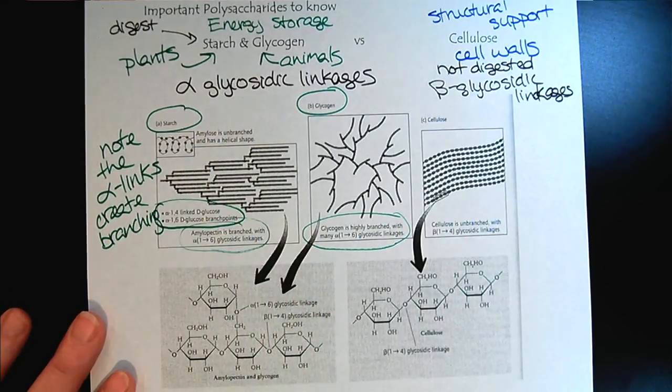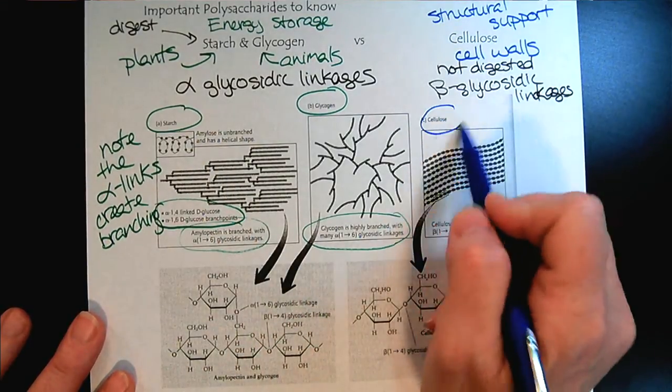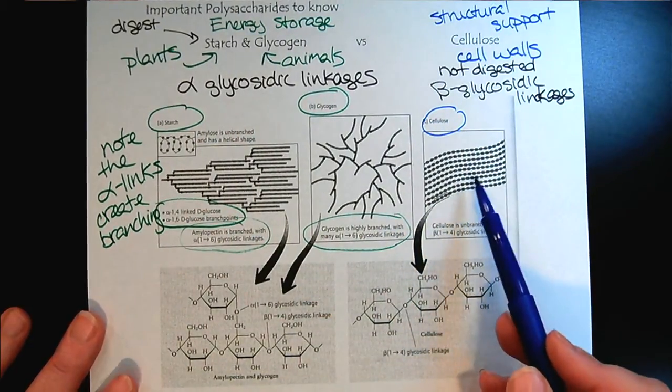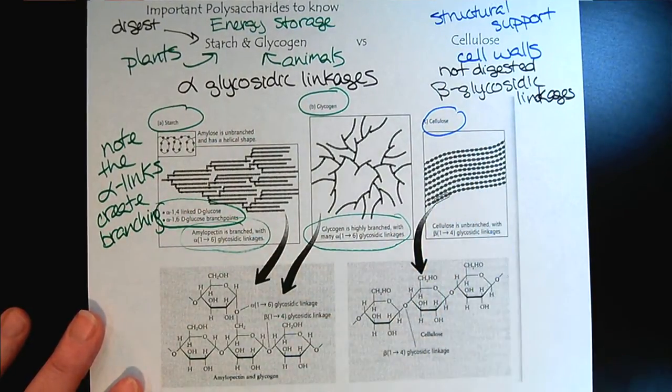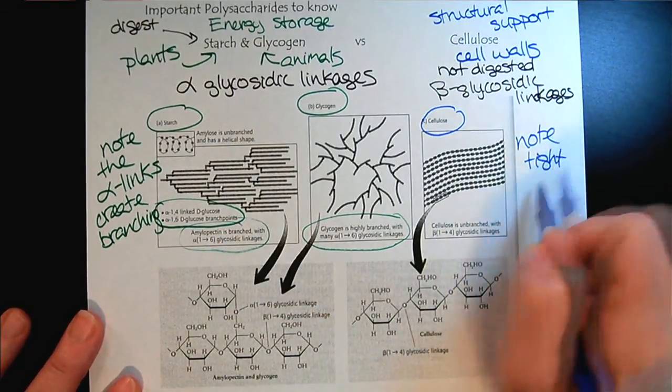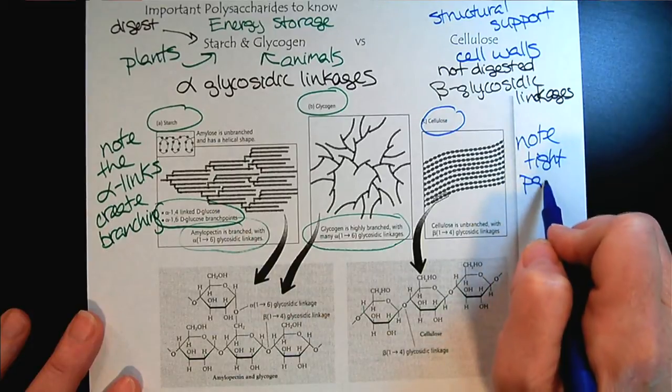And then if we compare that to cellulose with the beta links, notice how tightly that the polymers can align themselves. So notice the tight packing with the beta linkages.